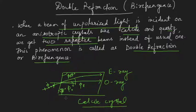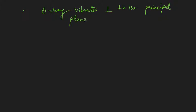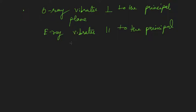With respect to this principal plane, we can describe the vibrations of the E-ray and O-ray. When unpolarized light enters the calcite crystal and splits into E-ray and O-ray: the O-ray vibrates perpendicular to the principal plane, whereas the E-ray vibrates parallel to the principal plane.